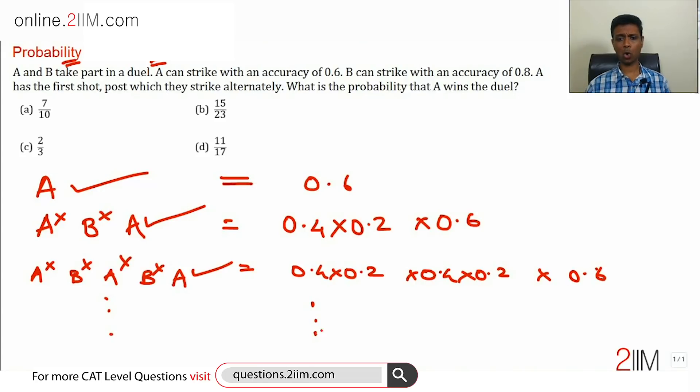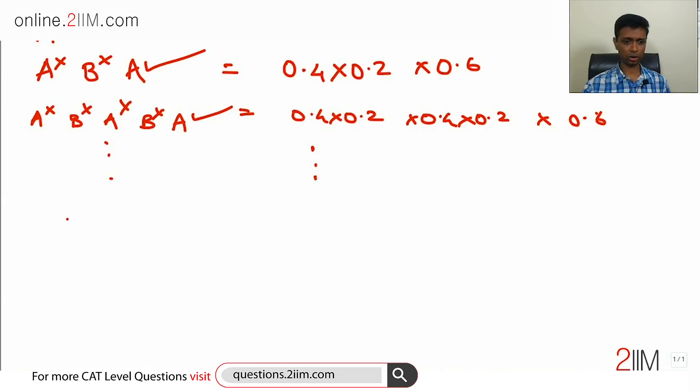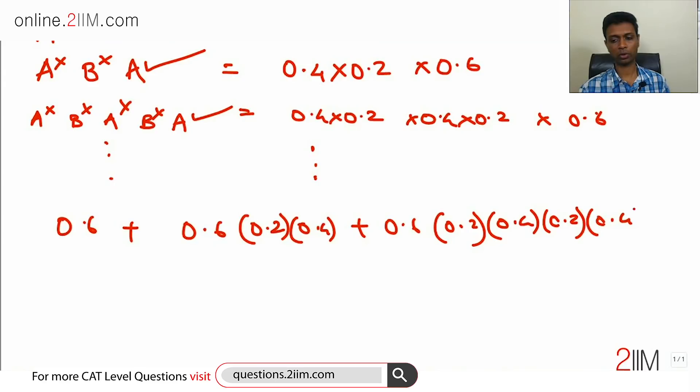We're looking for the overall probability, the sum of all of this: 0.6 + 0.6 × 0.2 × 0.4 + 0.6 × 0.2 × 0.4 × 0.2 × 0.4 and so on. This is a very interesting sequence. What is sitting underneath this sequence? This goes on for infinitely many terms - A can win on the hundred and first shot or the thousand and third shot.